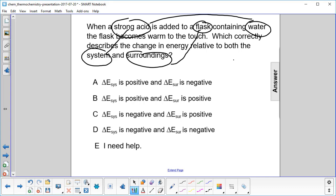So what's going on? The system is losing energy. It's giving up heat. So delta E system has to be negative. So which one of these work? It has to be one of these.